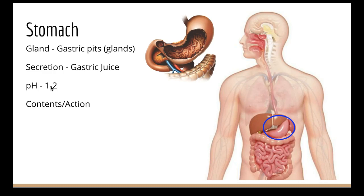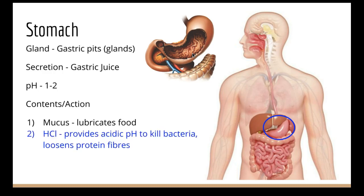Inside our gastric juice we have a little bit more mucus, which lubricates the food but is also protecting the stomach wall. There is a layer of mucus on the inside of the stomach that protects the wall from the really acidic environment and also protects it from being digested by the enzymes in the gastric juice.